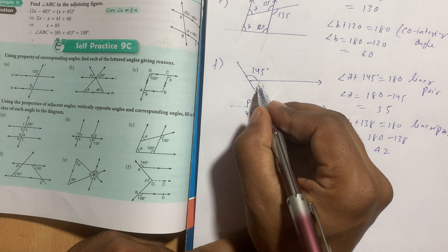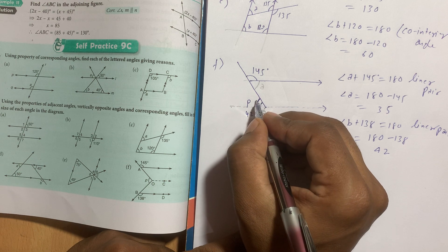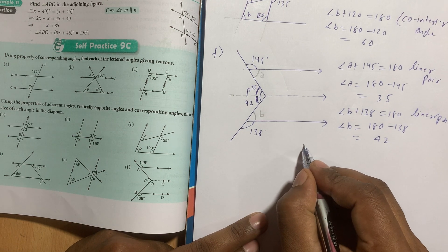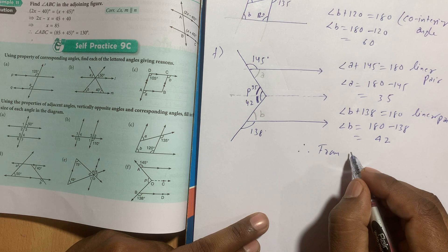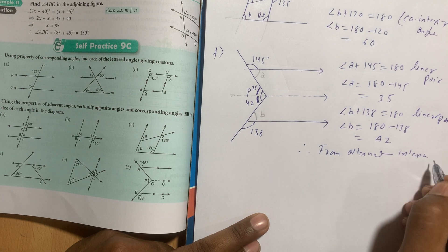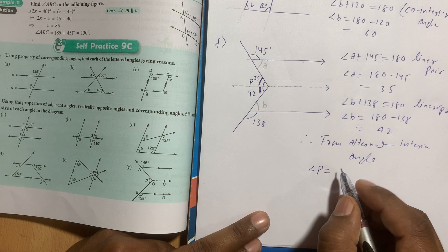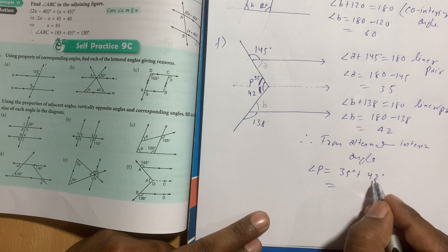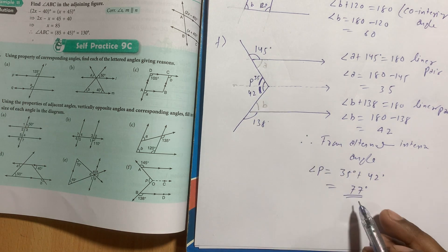Since these lines are parallel, the angles are alternate interior angles — so this value equals 42 degrees. The angle from A's side is 35 degrees. So angle P equals 35 degrees plus 42 degrees, which gives 77 degrees. Therefore the value of angle P is 77 degrees.